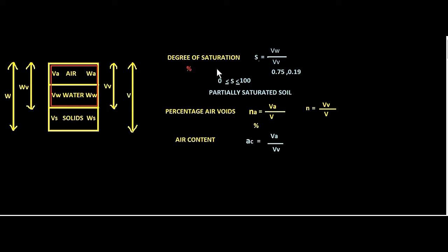Let's take a look at the boundary conditions. The least value of degree of saturation can be zero. For this to happen, the volume of water should be zero, meaning the whole voids are filled with air only and no water — that's when we call the soil a dry soil. The degree of saturation can be as high as 100%, which happens when the volume of water and the volume of voids are equal, meaning the whole voids are filled with water only and there is no air — then we call the soil fully saturated.